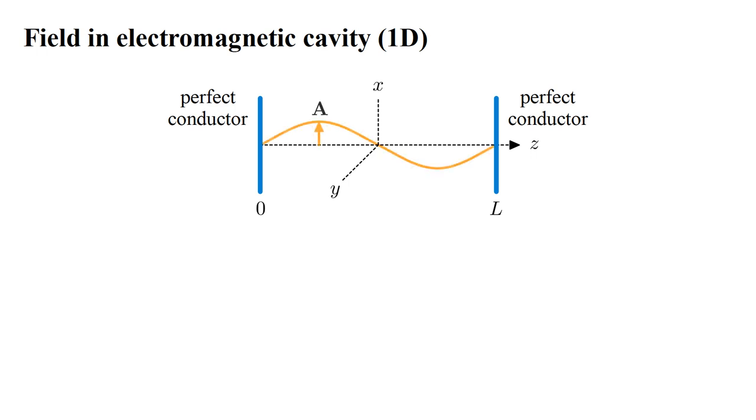We start with the simplest case, the field in a one-dimensional electromagnetic cavity. We assume the field varies only along the z-axis, and is confined by perfectly conducting planes to z-values between zero and L. In this region, assume the vector potential A has only an x-component that varies sinusoidally in z, and vanishes at z equals zero and L.